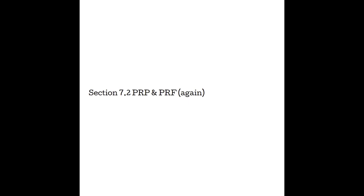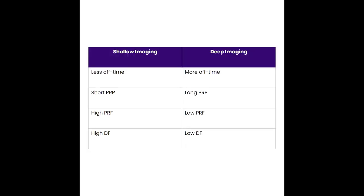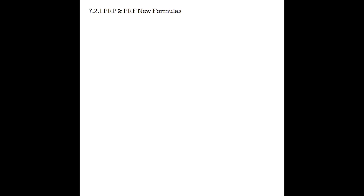Section 7.2 — PRP and PRF. Recall that the time it took to make the pulse plus waiting for the pulse to return is the pulse repetition period — it's on and off time. The amount of times a pulse could be sent per second is the pulse repetition frequency. Both PRF and PRP are highly dependent on imaging depth. Shallow imaging means less off time, resulting in short pulse repetition periods, higher PRFs, and high duty factors. Deep imaging has more waiting time, resulting in longer PRPs, lower PRFs, and low duty factors. PRP and PRF are reciprocals of each other, giving us PRP × PRF = 1.